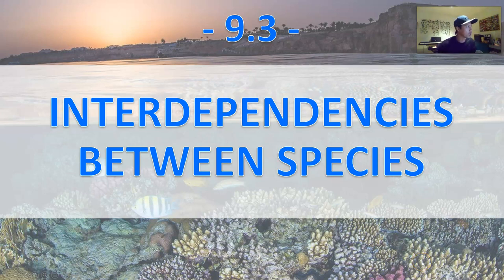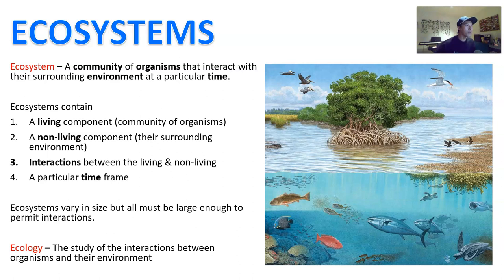Welcome to 9.3. We're going to look at interdependencies between species, and we're actually going to break this chapter into two videos. So let's go into the first part. Let's start by defining what is an ecosystem. An ecosystem is a community of organisms that interact with their surrounding environment at a particular time.